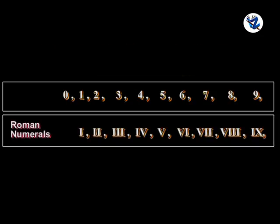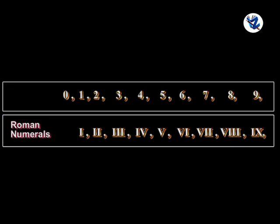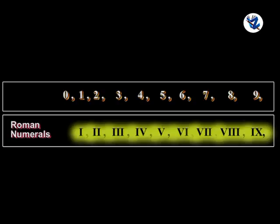In Europe, in the old times, Roman capital letters were used to write numbers and they were called Roman numerals. In this method, there was no symbol for 0. Also, the value of a symbol did not change with its place.